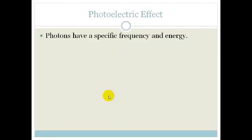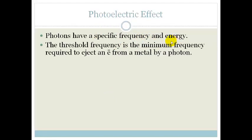So photons have a specific frequency and energy. The threshold frequency is the minimum frequency required to eject an electron from a metal by a photon. You need to learn this. This is a very important definition.